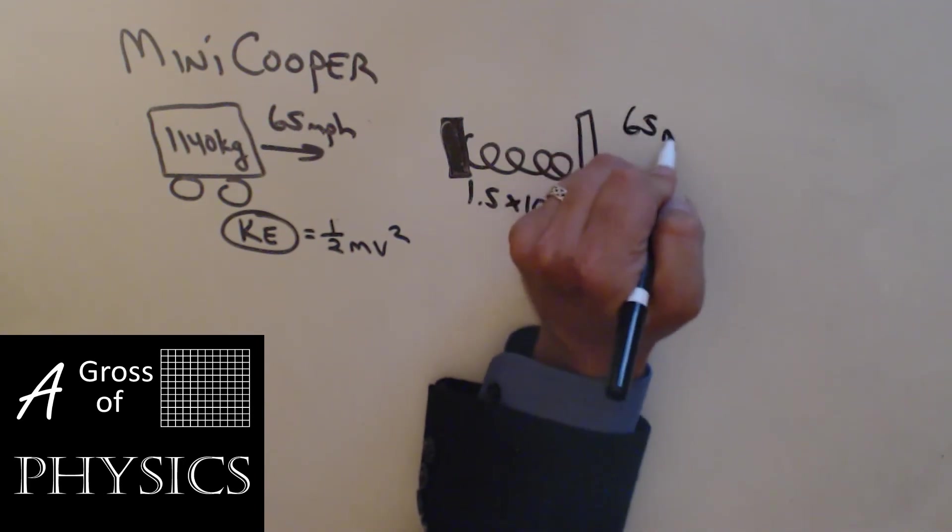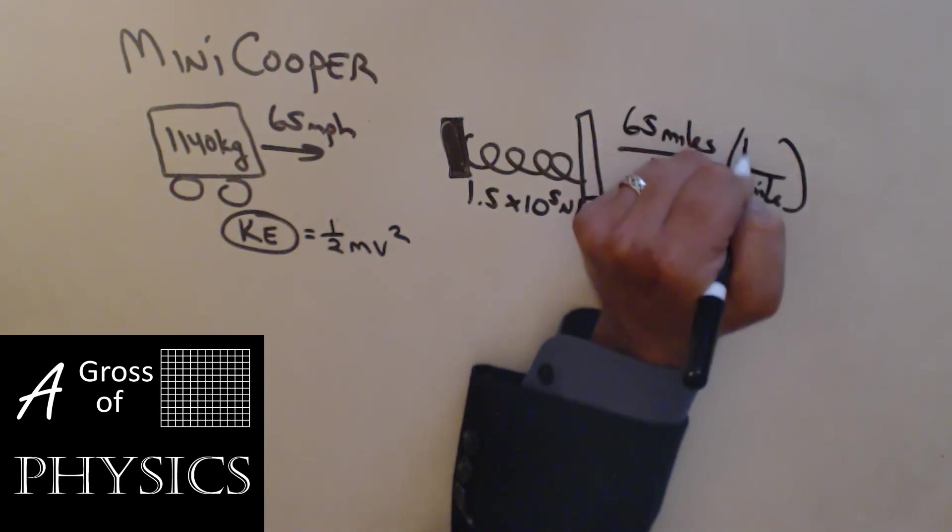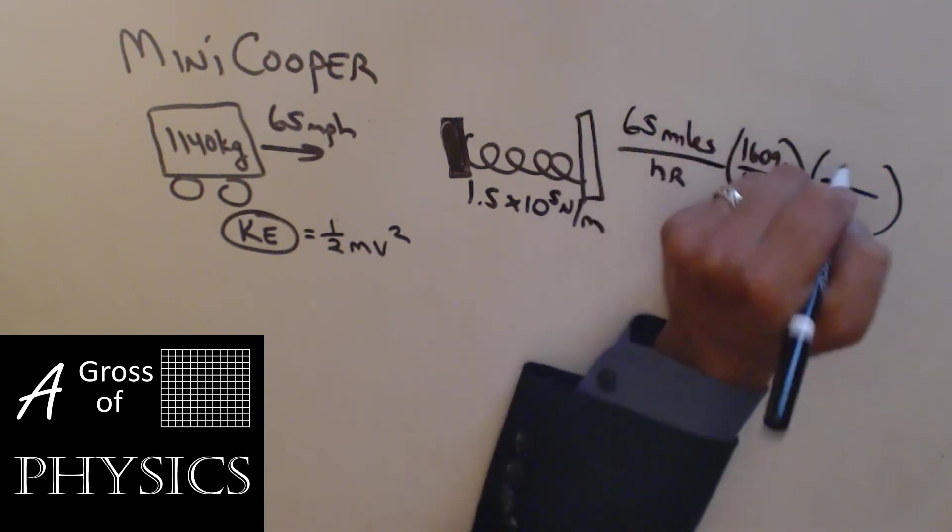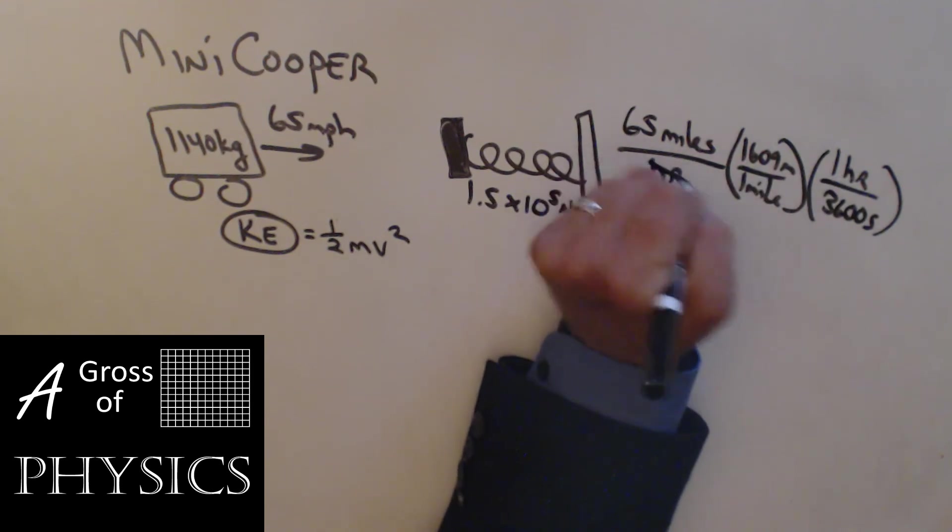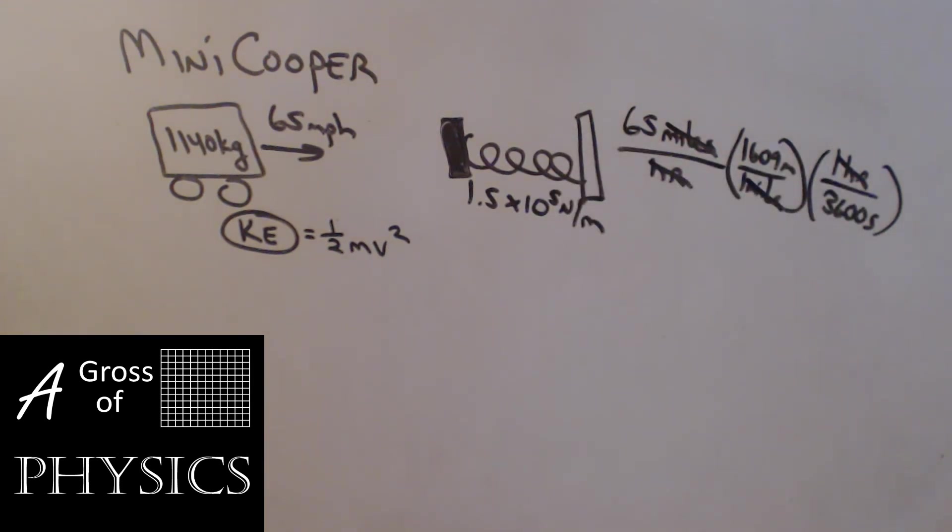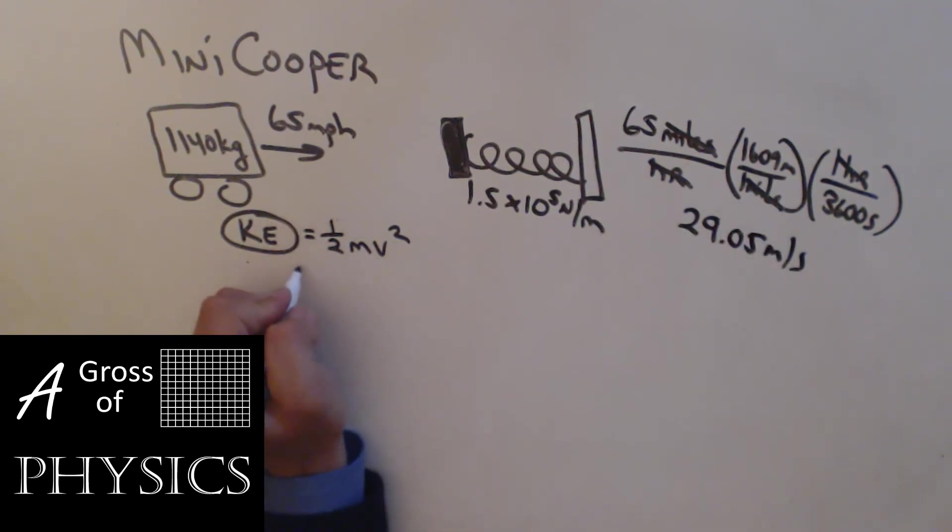Now, of course, 65 miles per hour, one mile equals 1609 meters, one hour equals 3600 seconds. So hours cancel, miles cancel, and we're left with meters per second. 65 times 1609 divided by 3600 gets me 29.05 meters per second.